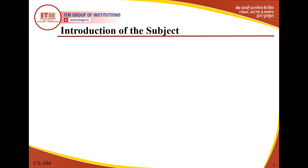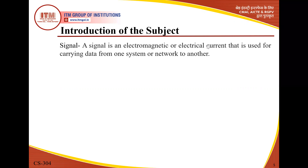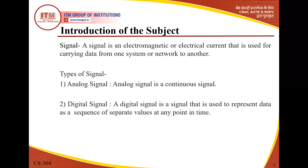In the introduction to the subject: a signal is an electromagnetic or electrical current used for carrying data from one system to another. Signal carries information from one place to another — like mobile communication, where we transfer information from source to destination, either transmitter to receiver. It may be electromagnetic or electrical depending on the type of communication required.